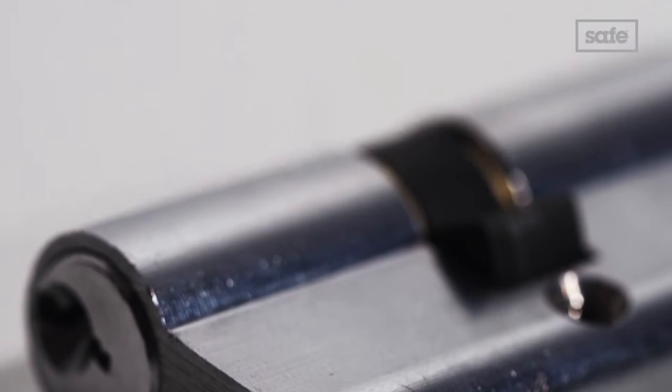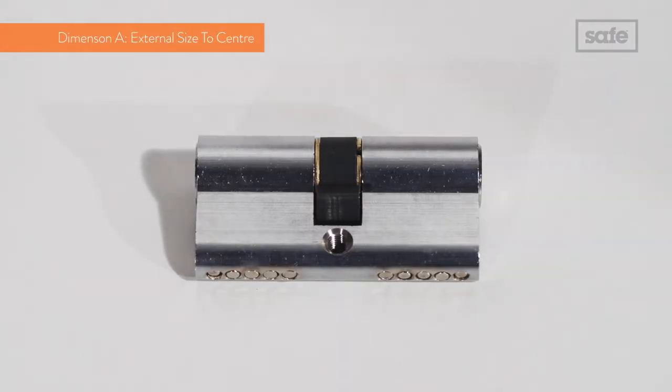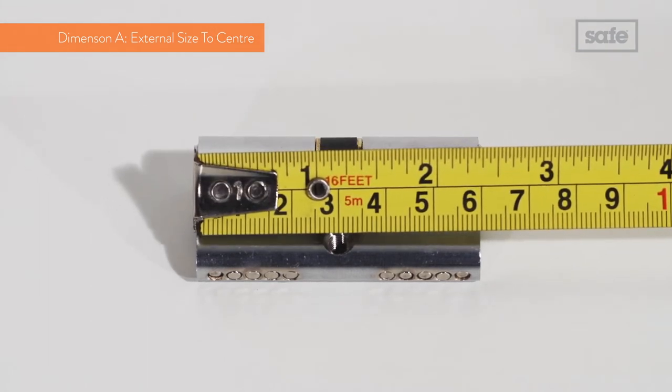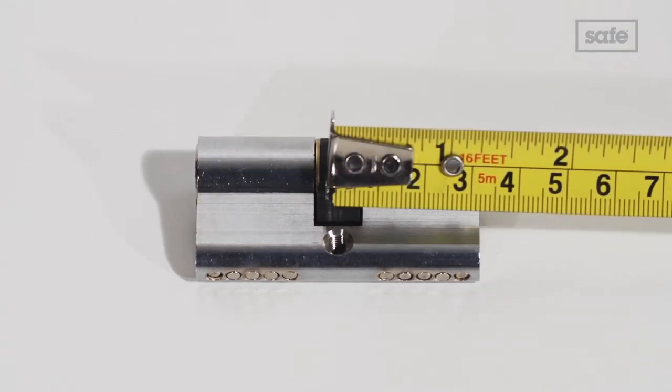The first measurement is called the external size to centre, known as dimension A. As you can see we are measuring from the left hand edge to the screw hole in the centre of the cylinder.